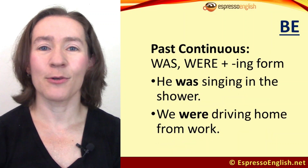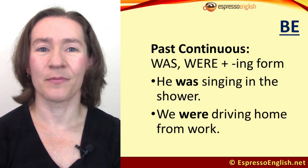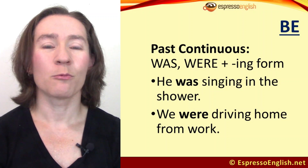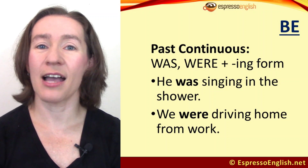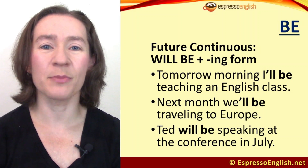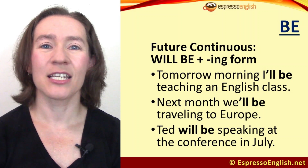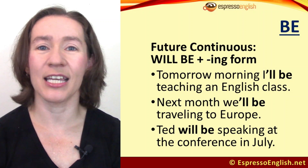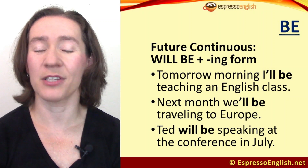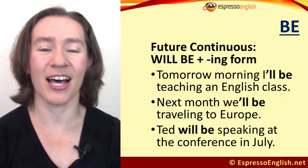In the past continuous we have was or were plus the ing form. For example: he was singing in the shower; we were driving home from work. And the future continuous is will be plus the ing form. For example: tomorrow morning I'll be teaching an English class; next month we'll be traveling to Europe; Ted will be speaking at the conference in July.